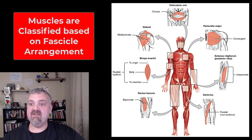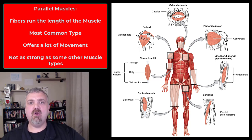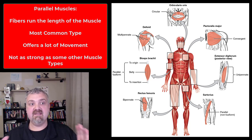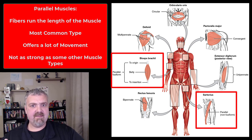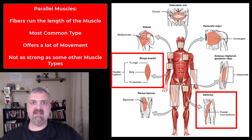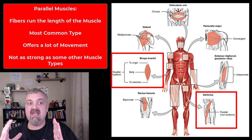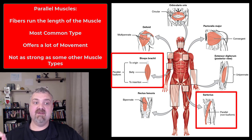Most skeletal muscles are called parallel muscles. All the fibers in the fascicle run parallel to the long axis of the muscle. The biceps brachii is an example of a parallel muscle, and so is the sartorius. Parallel muscles are nice because you get a lot of movement — when a parallel muscle contracts, it shortens about 30% of its length as it thickens in the middle. However, it's not the strongest muscle type we have.